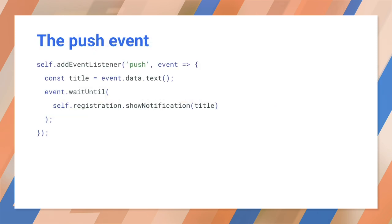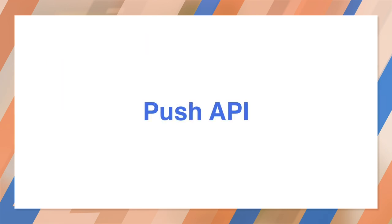In a push event handler, you can get the data from the message to display a notification. The push API allows a user to subscribe to messages sent from your app server via the push service used by the browser. Subscribing is done in the JavaScript for the page. Responding to push events, for example by displaying a notification, is done in the service worker.